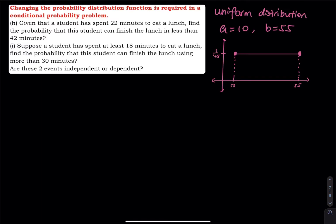This video is the continuation of the previous video. In the previous video, we talked about that the time it takes a student to finish lunch falls between 10 and 55 minutes, and the time follows a uniform distribution. So the minimum is 10, the maximum is 55, and the PDF is f(x) = 1/(55−10) = 1/45. That's why the height of the rectangle is 1/45, and we drew that graph for each problem.